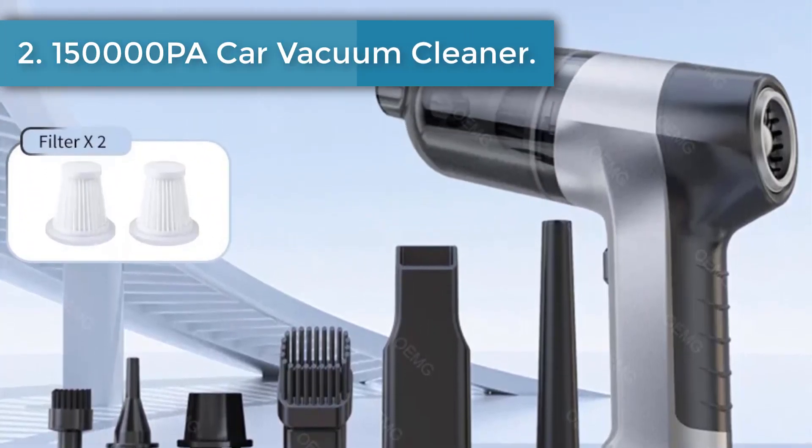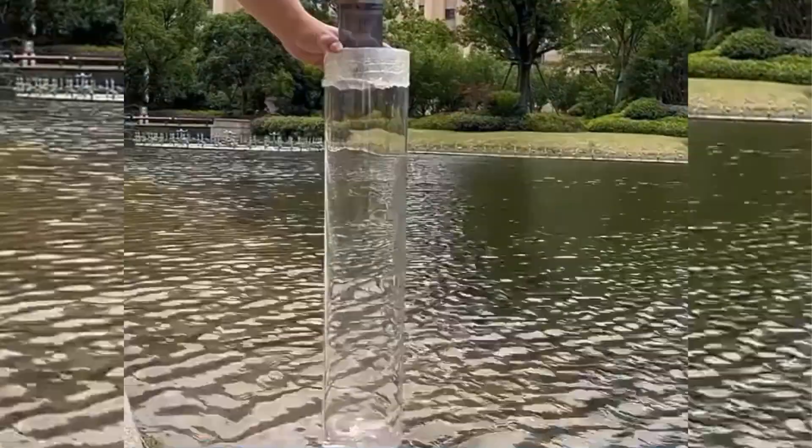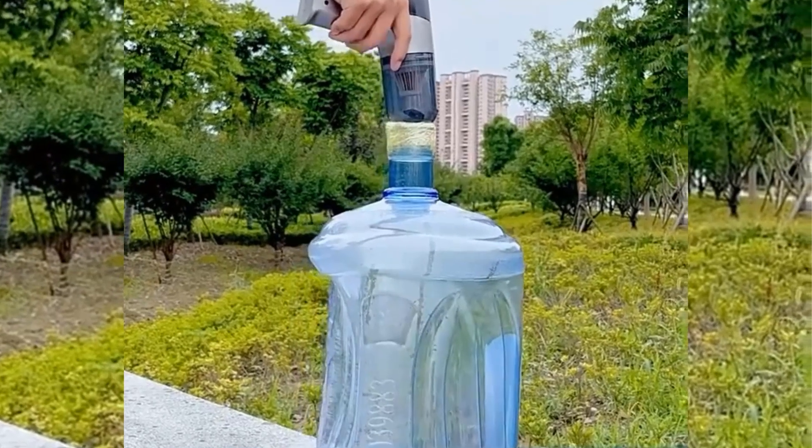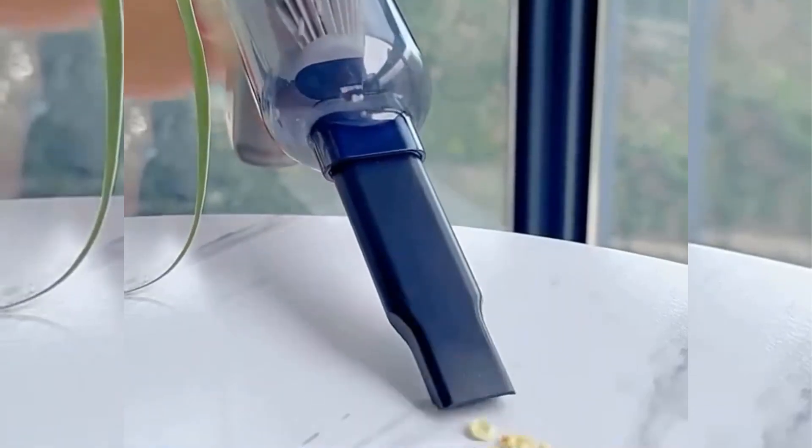This vacuum cleaner uses a smart chip with a child lock function. The switch will not open when tapped to prevent children from accidentally touching it. Normal mode start method: long press the switch for three seconds and then start.